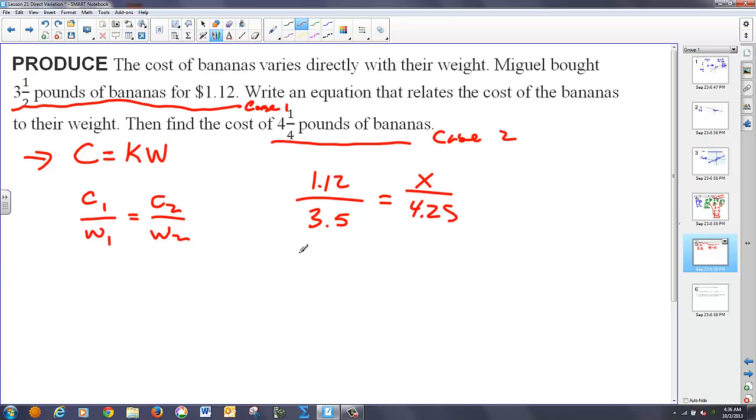So if I take 1.12 times 4.25 which is a cross product that should be equal to 3.5x. 1.12 times 4.25 is 4.76 that's equal to 3.5x, divide both sides by 3.5, and in that case x is equal to 1.36, and that's a dollar value.